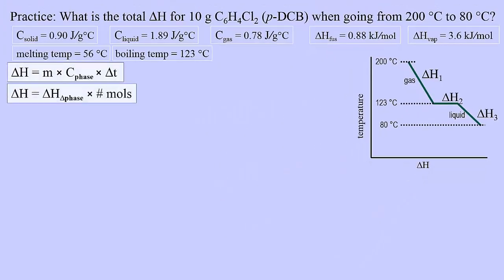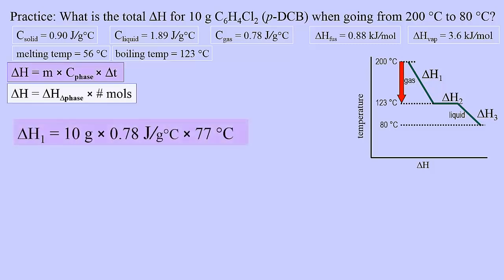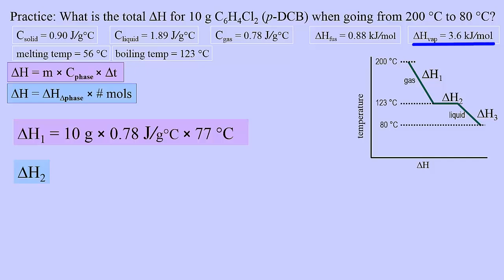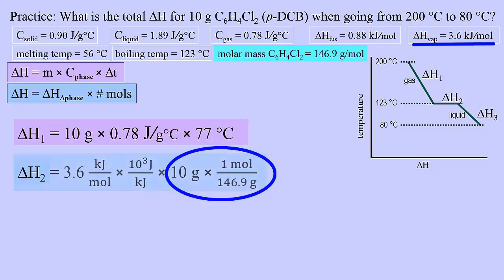Drawing the temperature versus energy change shows three energy changes occurring. The first energy change occurs in the gas phase, so we use the specific heat of the gas, and the temperature change is 77 degrees. Grams and Celsius cancel, leaving joules. For the second delta H, we'll need heat of vaporization, which is the energy needed to boil one mole of paradichlorobenzene. But here we have condensation — the magnitude of the energy change is the same, just in the opposite direction, so we can use the value given for heat of vaporization. Since it is given in kilojoules per mole, we use the molar mass of paradichlorobenzene to convert mass to moles and convert kilojoules to joules. All units cancel except joules.